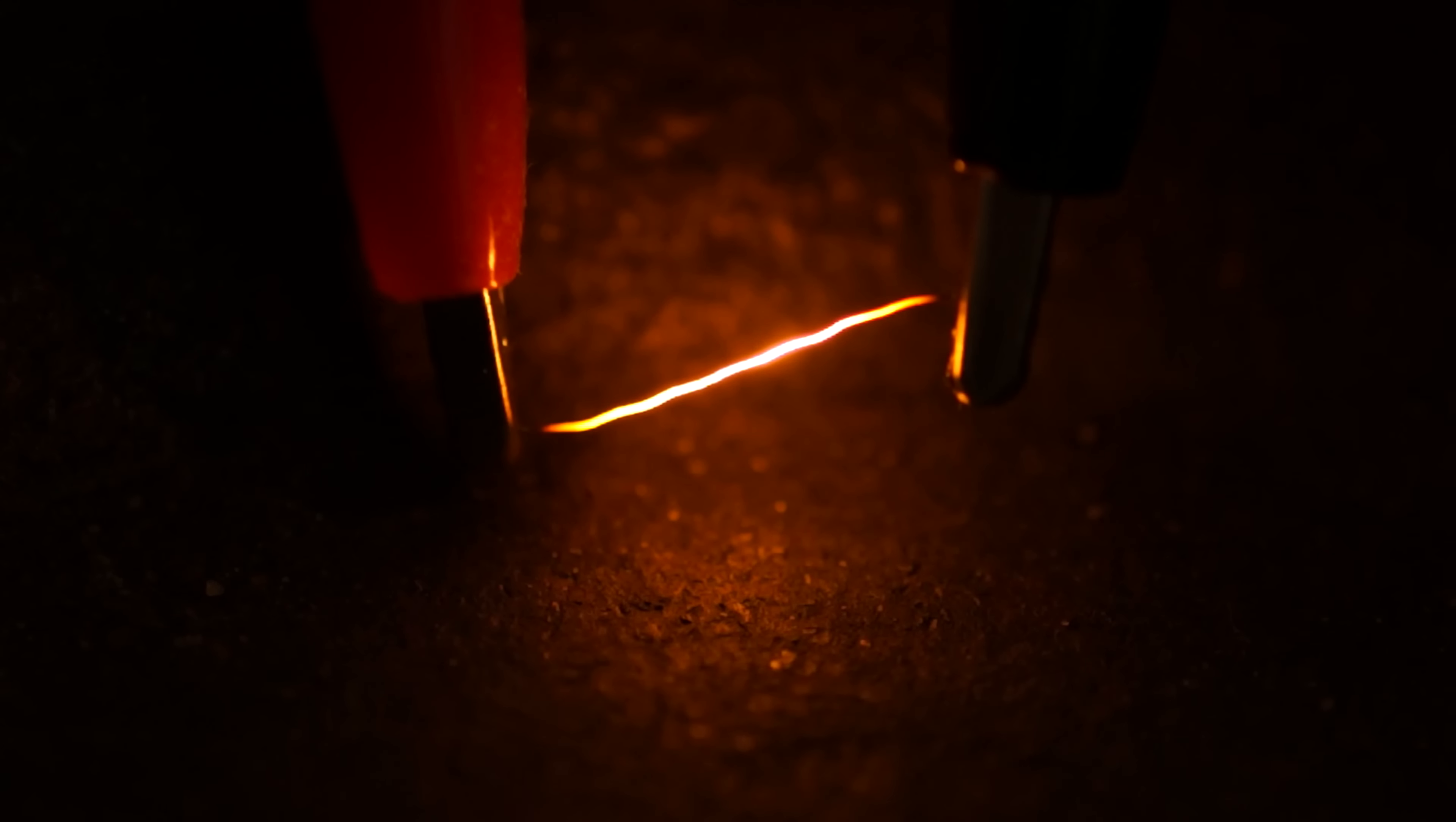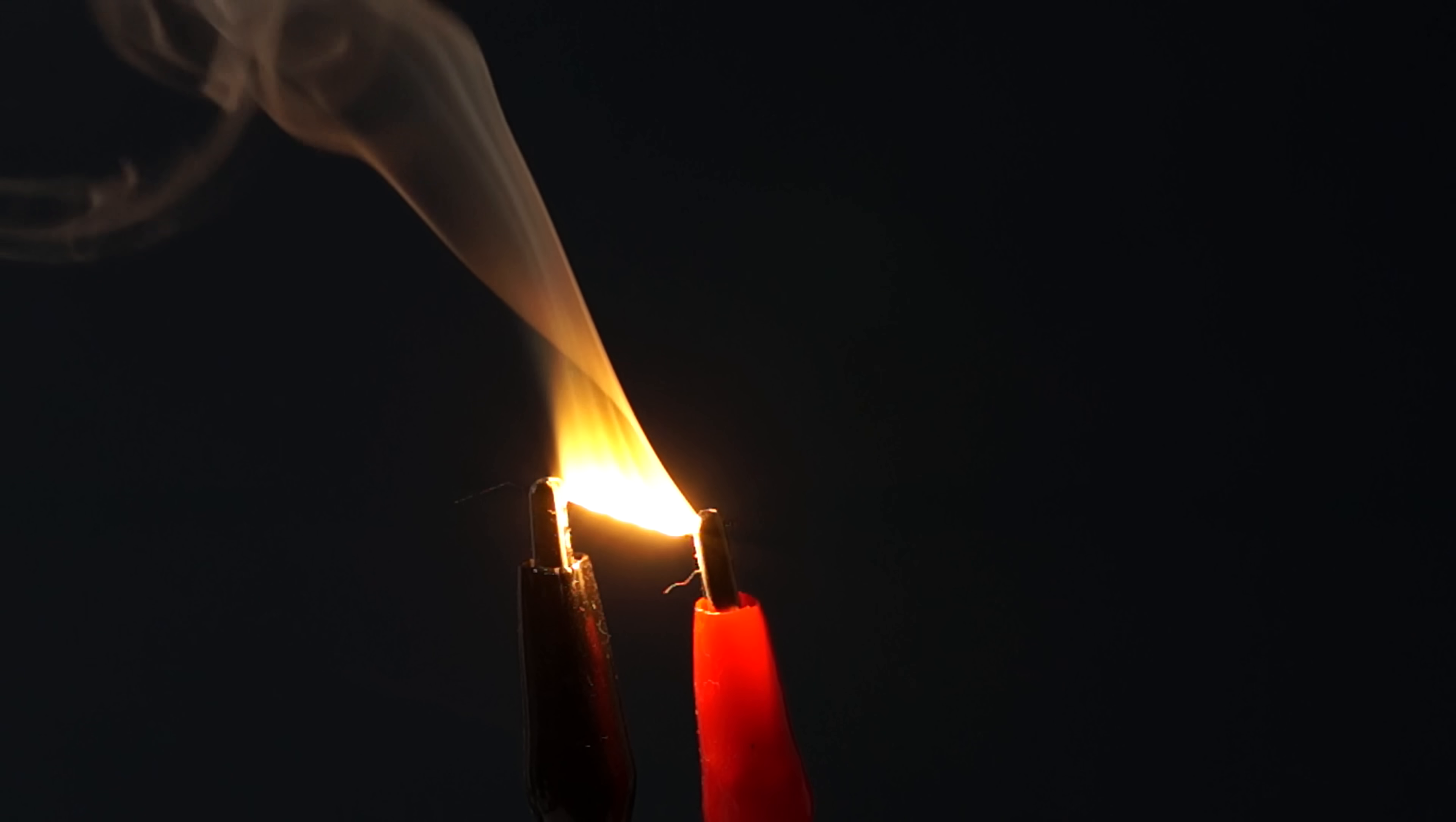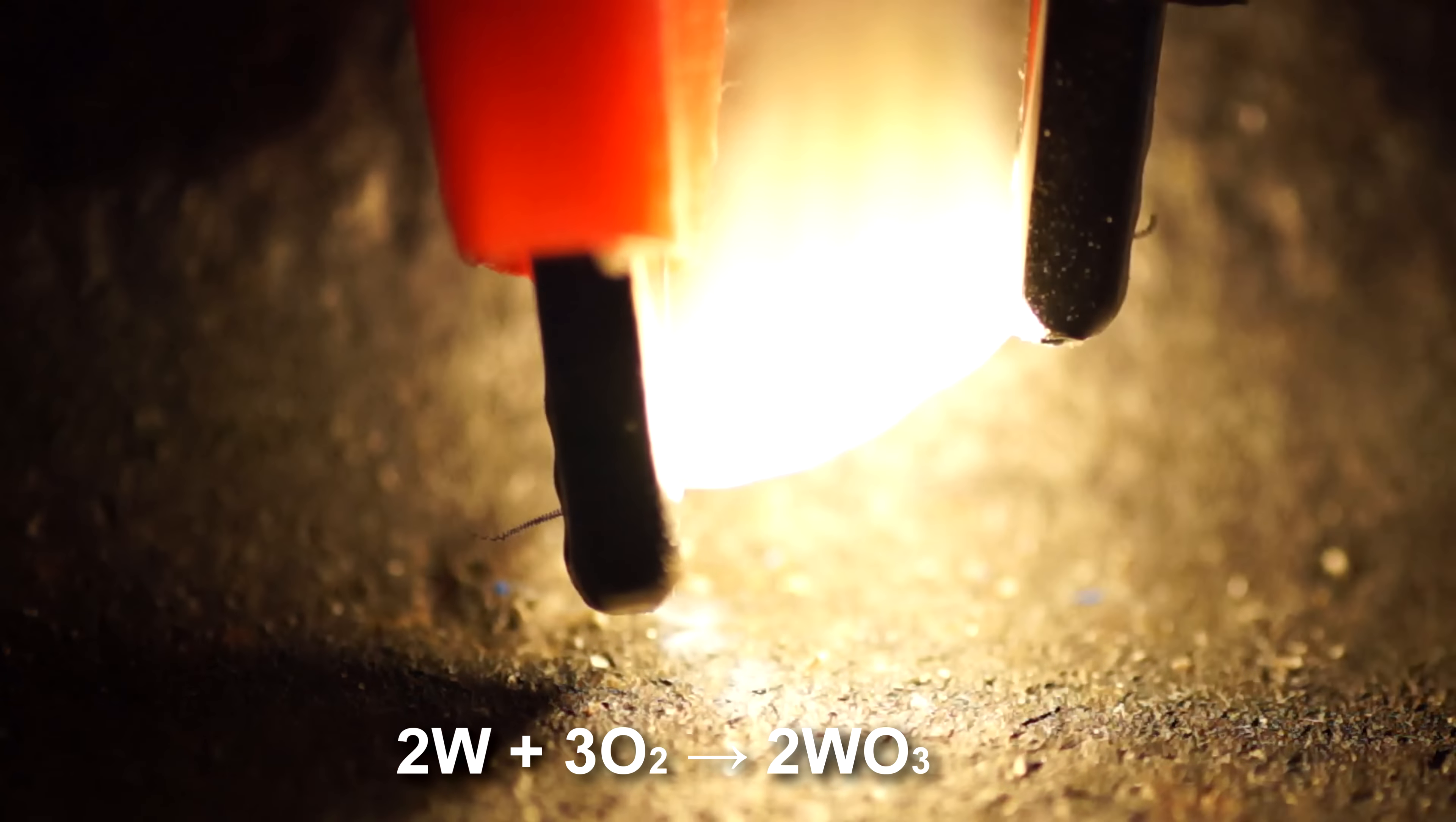However, if you pass a current through thin tungsten filament, it can overheat and then break, thereby ceasing any production of light. This is due to the fact that in air tungsten oxidizes at high temperature, forming on its surface oxides of tungsten.